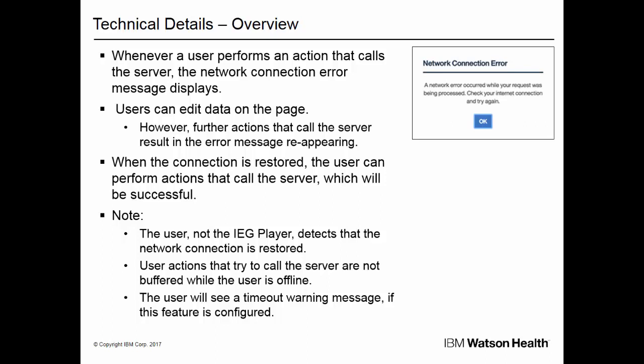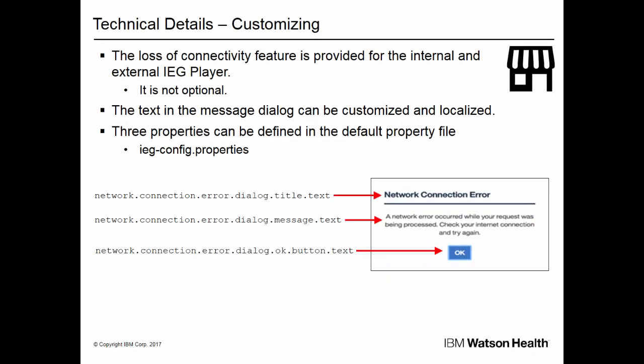Note that the user, not the system, detects that the network connection is restored. In addition, user actions that attempt to call the server are not buffered while the system is offline. The user will see a timeout warning message if this feature is configured. If the session times out after 30 minutes, the data is lost. The loss of connectivity feature is provided for the internal and external IEG player. The feature is turned on by default and it is not configurable. The text in the message dialog can be customized and localized. Three properties can be defined in the default property file, iegconfig.properties, for the IEG player and script.